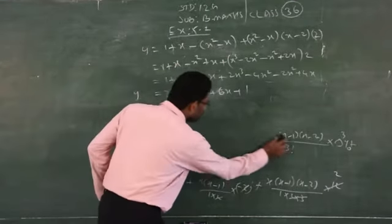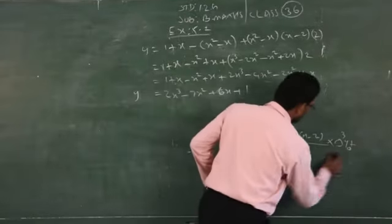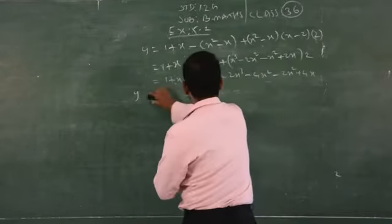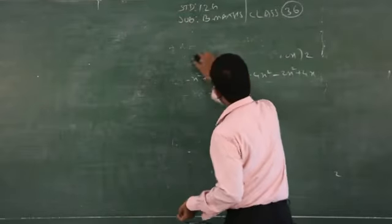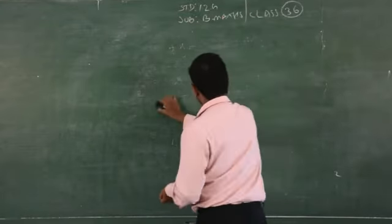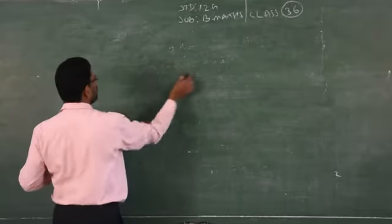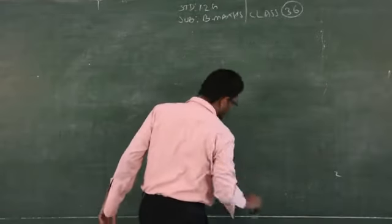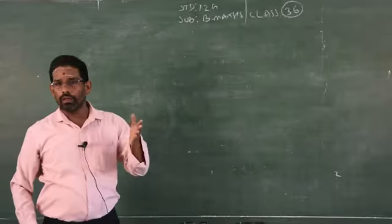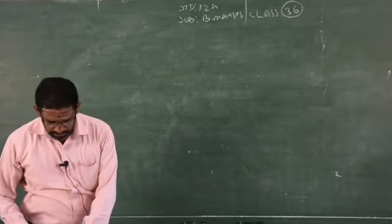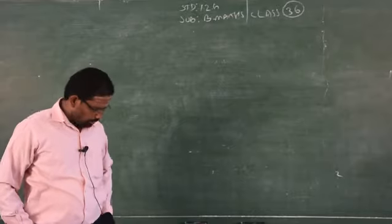Just simplify by multiplying out the brackets, taking care of signs, and combining like terms. You will get the required cubic polynomial. The remaining calculation you have to complete at home using a calculator. Now we will go to sum number 4.